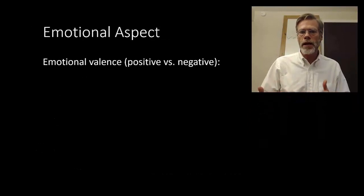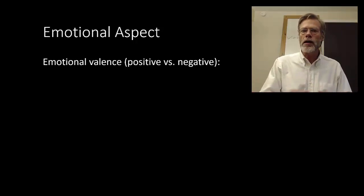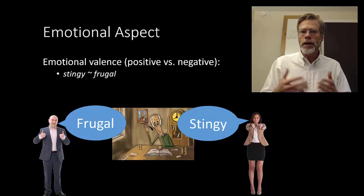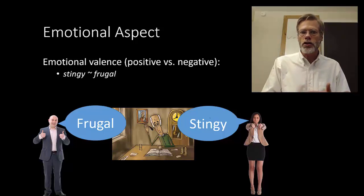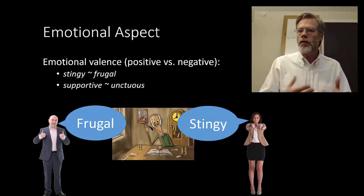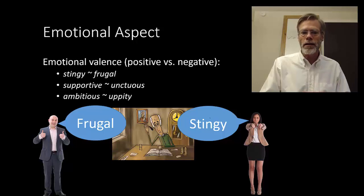Looking at the emotional aspect in more detail, I want to focus on valence — whether it's positive or negative. For example, we have pairs like 'stingy' and 'frugal,' where stingy is negative and frugal is positive. But in both cases, it's describing a person who does not spend their money freely. So in terms of informational value, they mean the same thing, but their emotional value makes them two different words. Other pairs like that would be 'supportive' and 'unctuous,' or 'ambitious,' which is positive, and 'uppity,' which is negative.